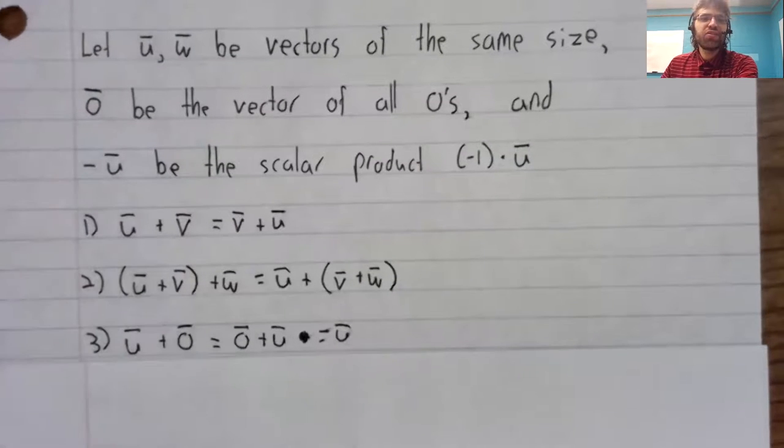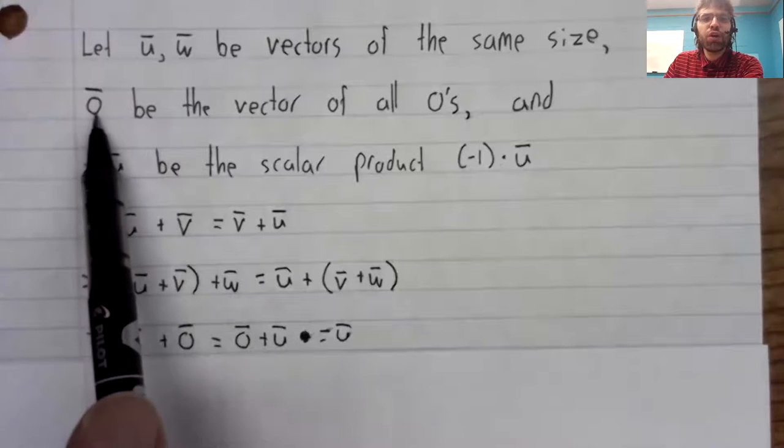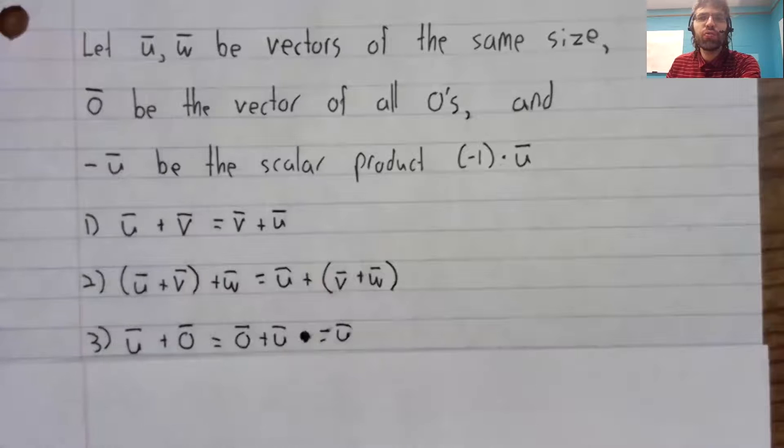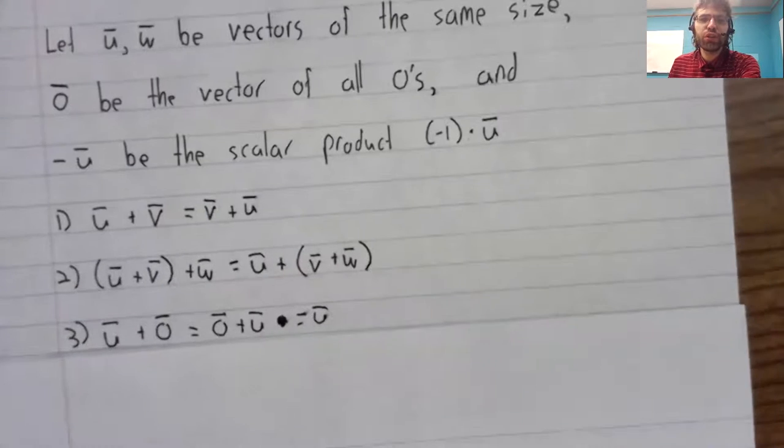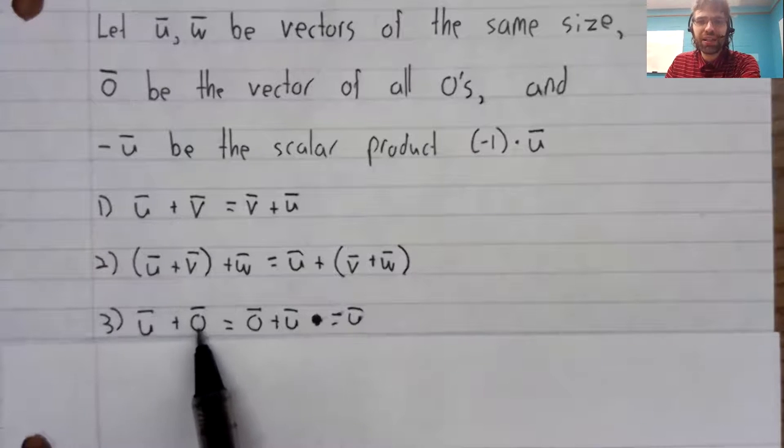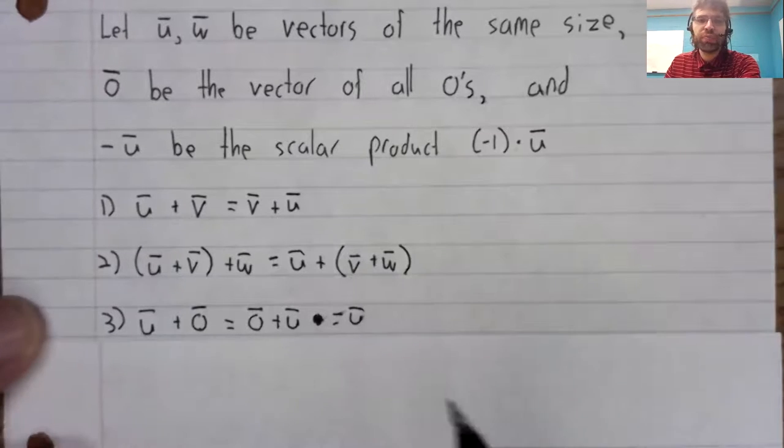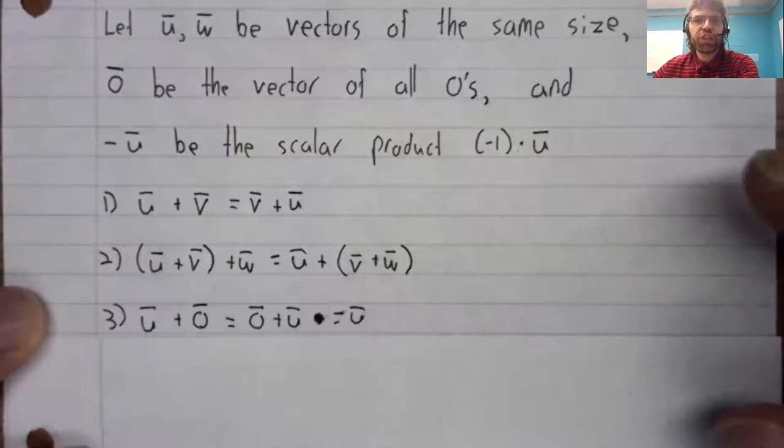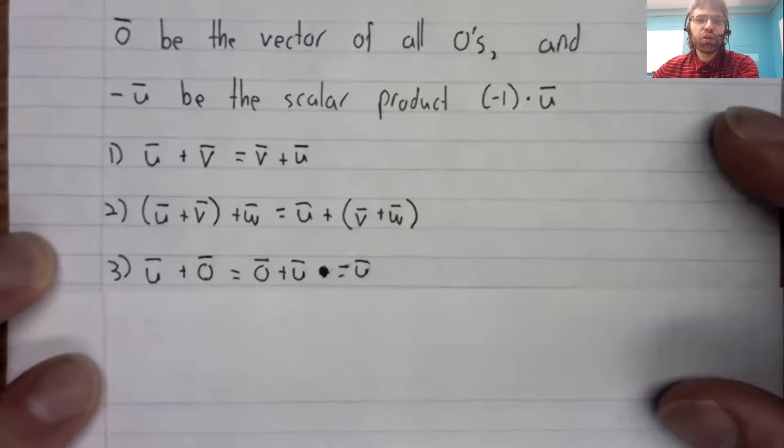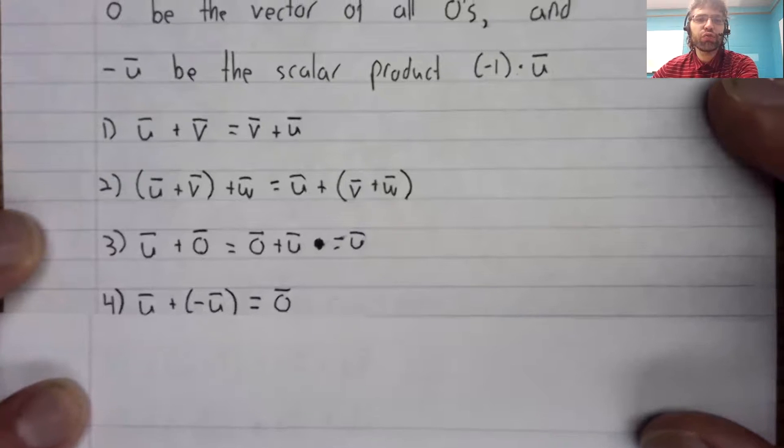Adding zero doesn't change a vector. This one requires a little comment. Notice up here that zero is the vector whose entries are always zero. So a vector plus the zero vector is still the original vector. And of course, that's a property that real numbers have too. Real numbers plus zero are still the original real number.